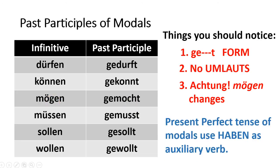One thing we do need to know for double infinitive construction is this rule: anytime we utilize the present perfect tense with a modal in German, our auxiliary or helping verb will be haben. So you don't have to worry about sein. Just: ich habe, du hast, er/sie/es hat, wir haben, ihr habt, sie haben.